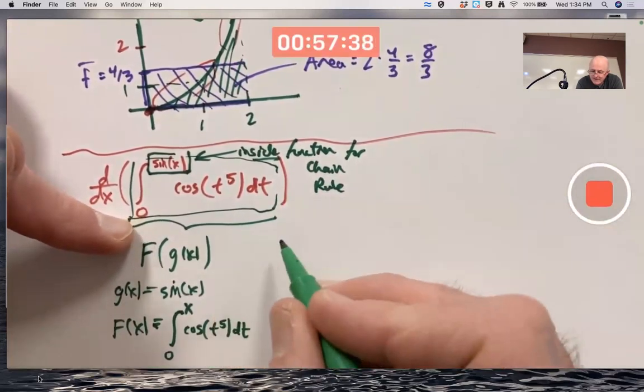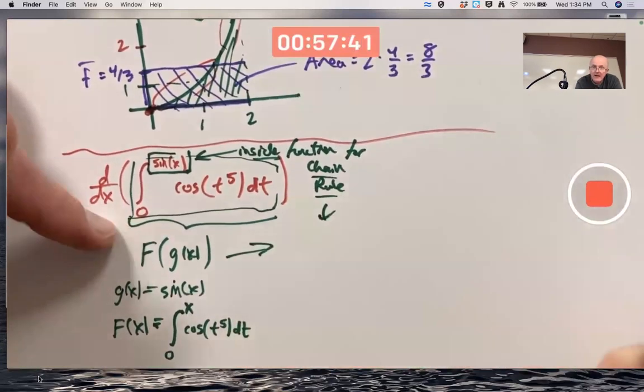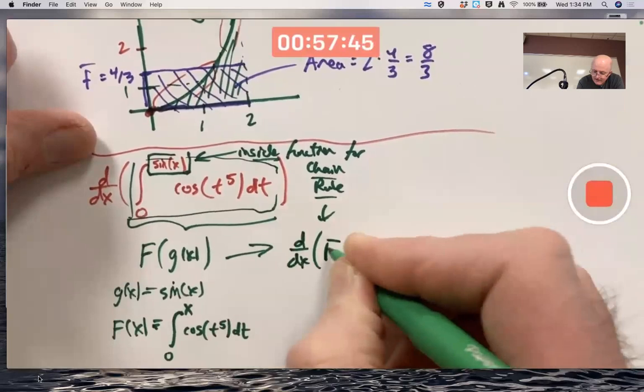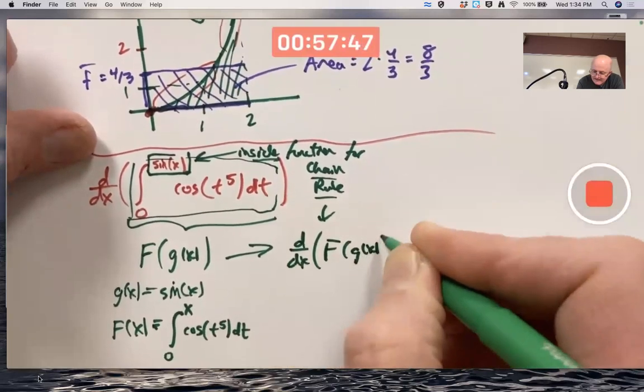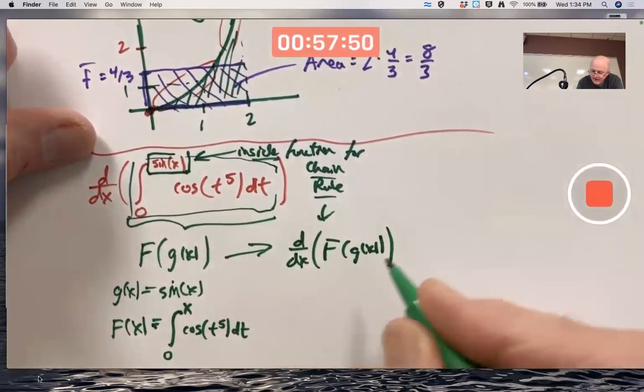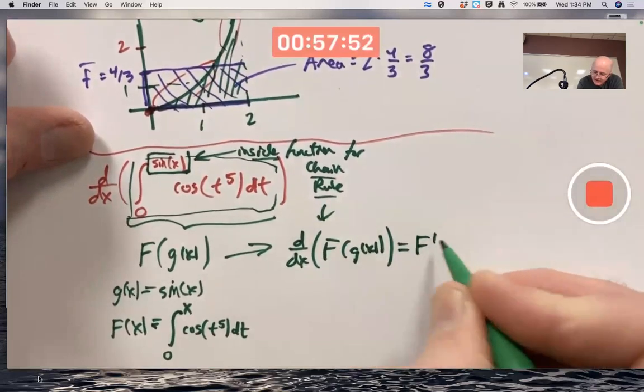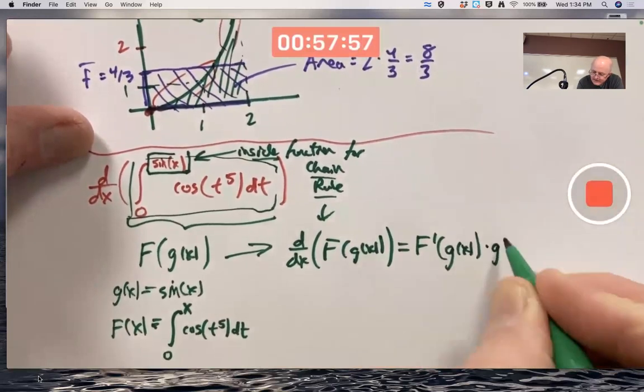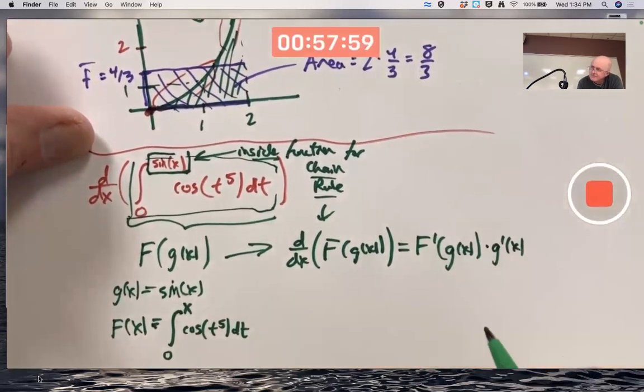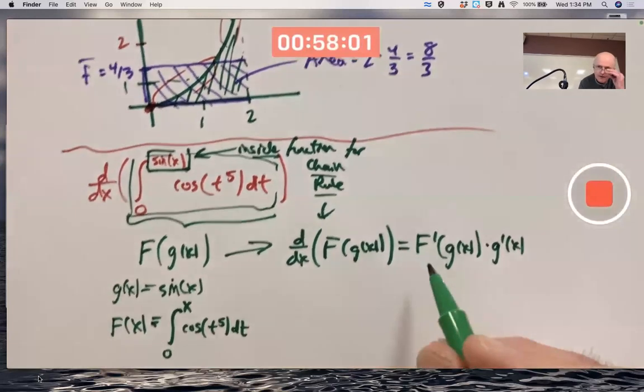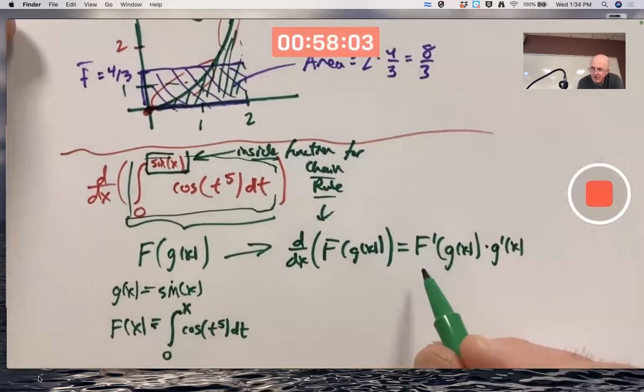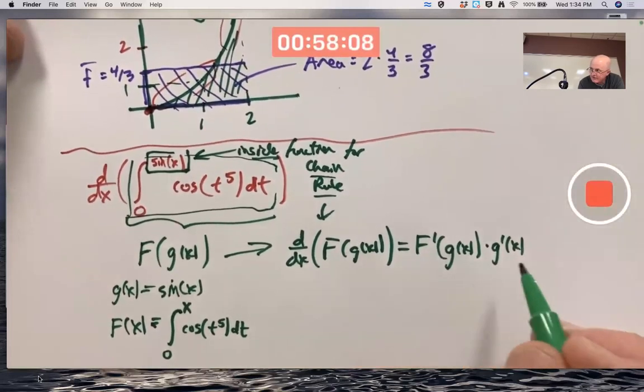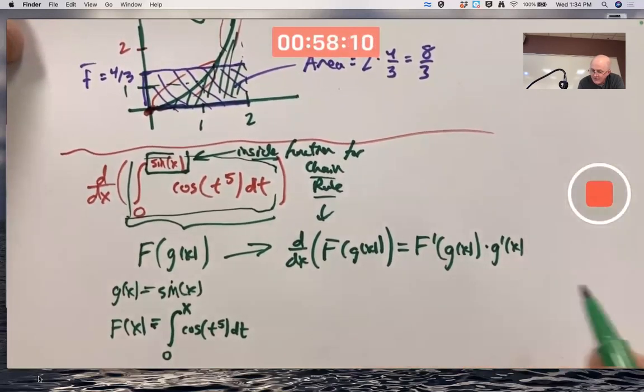The chain rule says that the derivative of a composition, f of g of x outside function of inside function, is the derivative of the outside function evaluated at the inside function times the derivative of the inside function. Did I say that right? The derivative of the outside function, capital F prime, evaluated, plug in the inside function, g of x, times the derivative of the inside function. This is the abstract form of the chain rule.